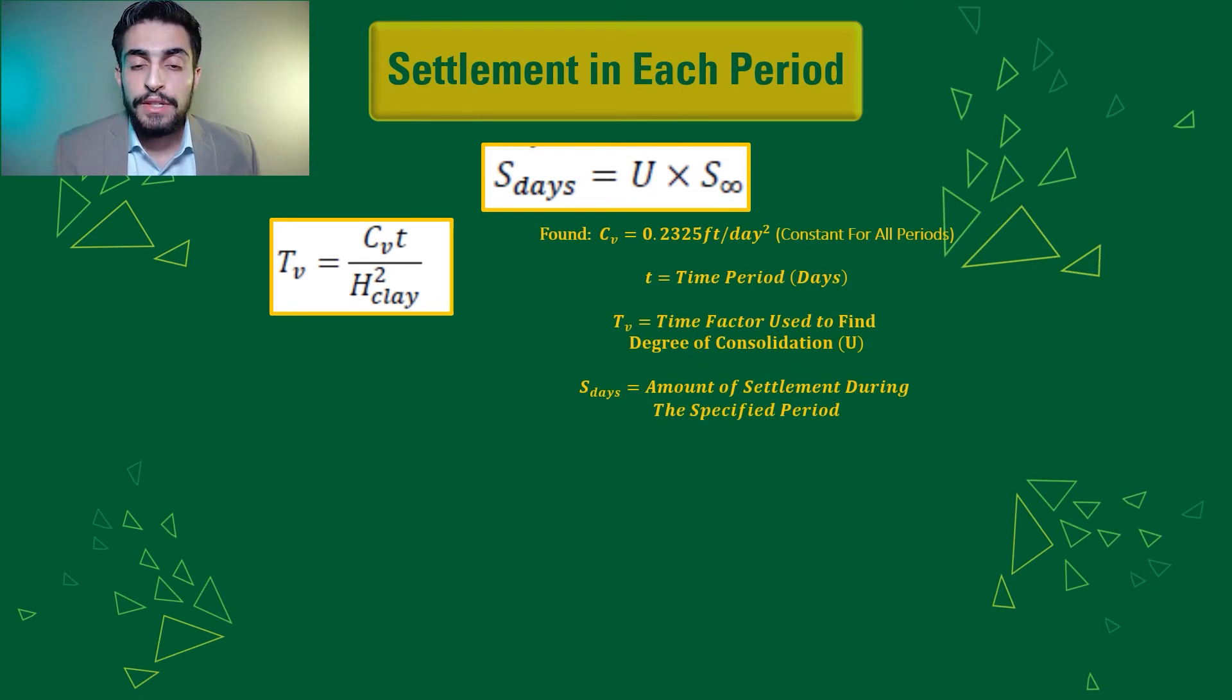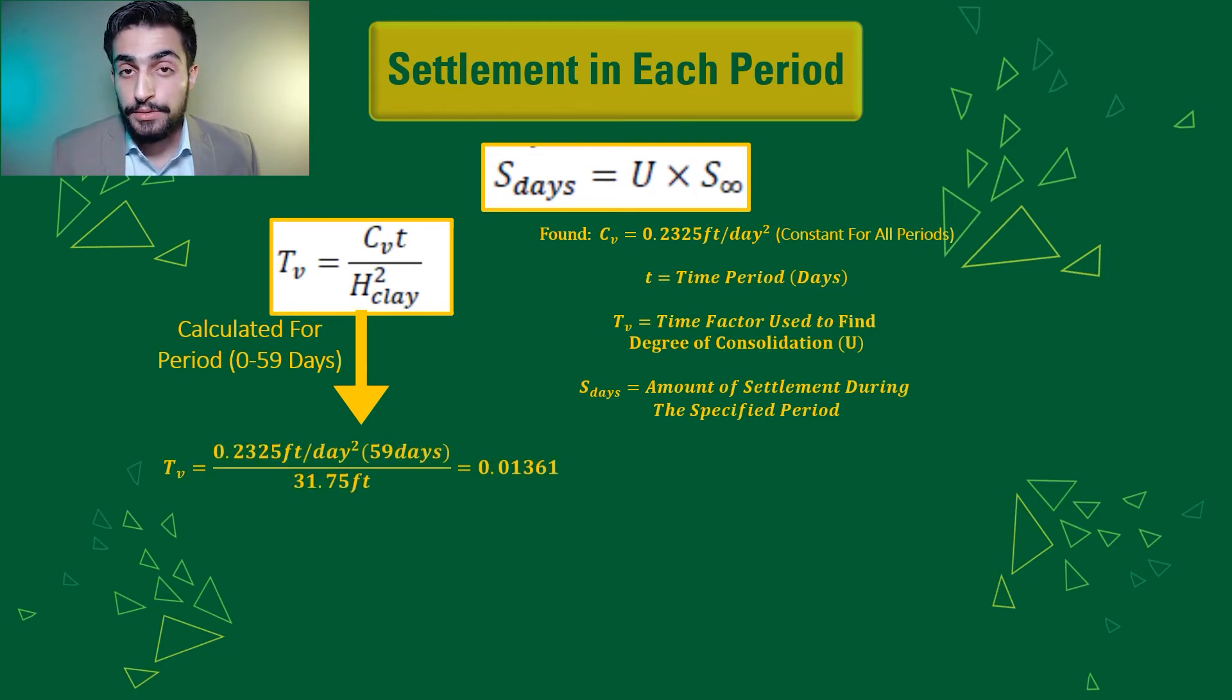U is found through the value of Tv, which is a time factor. While it's calculated from this equation that Cv stands for the coefficient of consolidation, which we approximated to be 0.2325 feet per day squared. For the first period, Tv was found to be 0.01361.